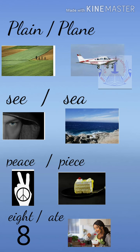More homophone examples: 'plain' (P-L-A-I-N) means a flat surface, and 'plane' (P-L-A-N-E) means aeroplane. 'See' (S-E-E) means to see, and 'sea' (S-E-A) means the Arabian Sea. 'Peace' (P-E-A-C-E) means peace of mind, and 'piece' (P-I-E-C-E) means a piece of cake. 'Eight' (E-I-G-H-T) is the number, and 'ate' (A-T-E) is the past tense of eat — 'I ate a piece of cake.'